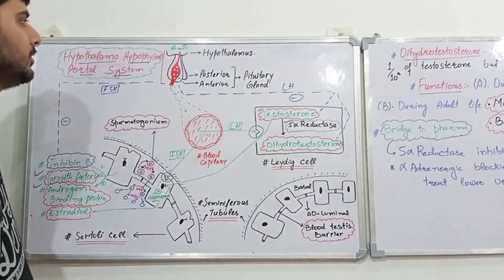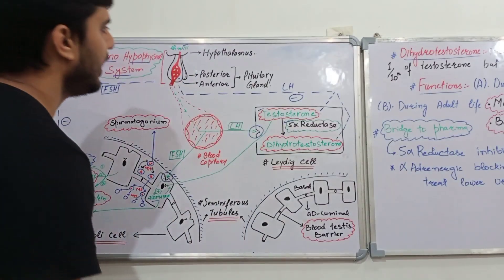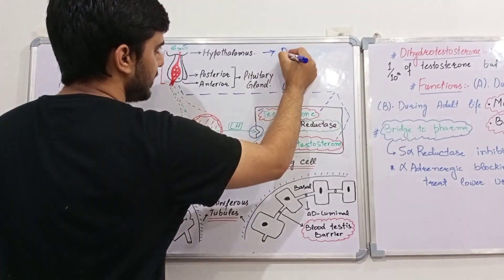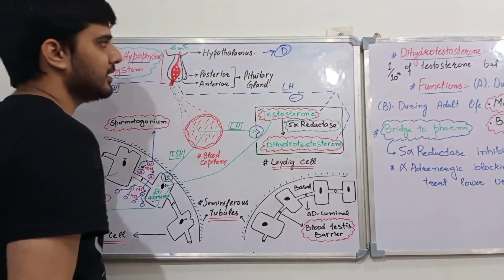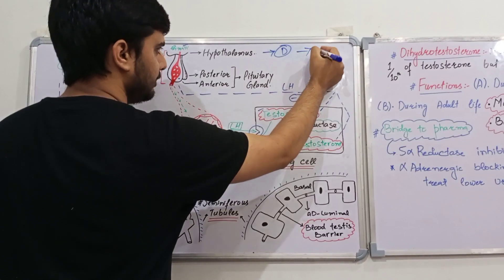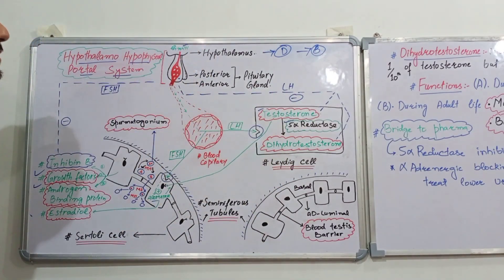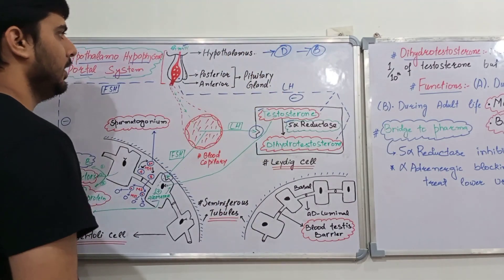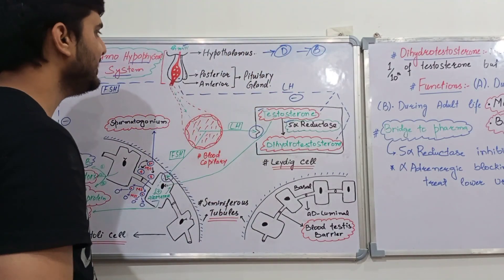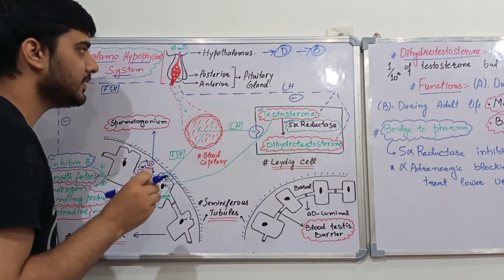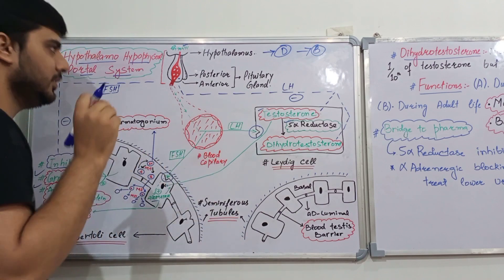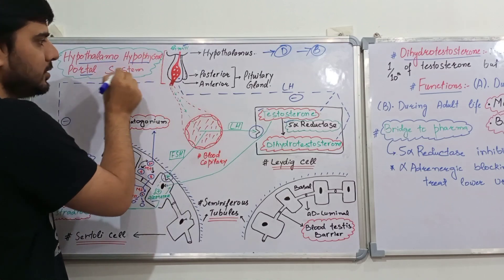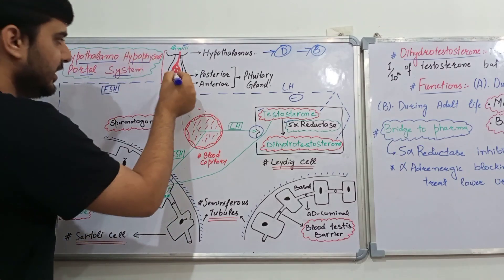I am beginning with the male reproductive system, and for that I will start at the hypothalamus, which is part of the diencephalon, which in turn is part of the brain. The hypothalamus releases various releasing as well as inhibiting factors. These factors travel via the hypothalamo-hypophysial portal system and reach the anterior pituitary.